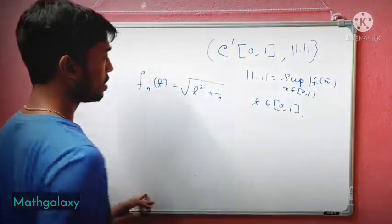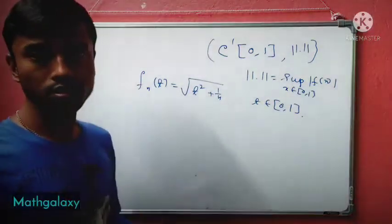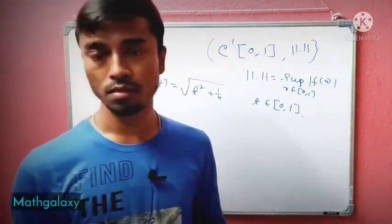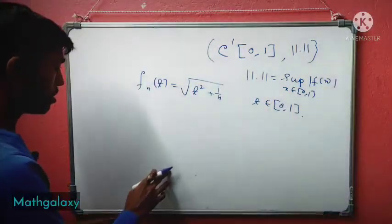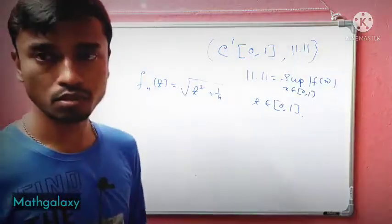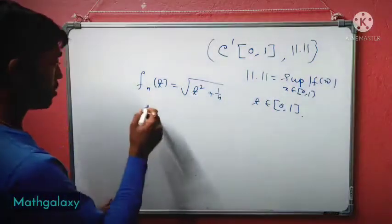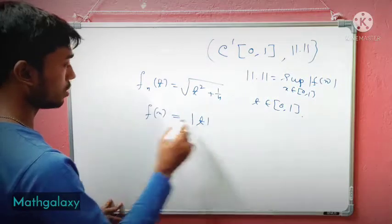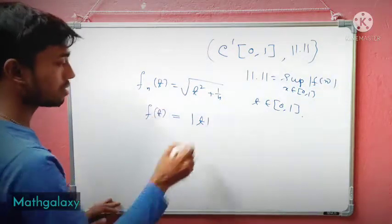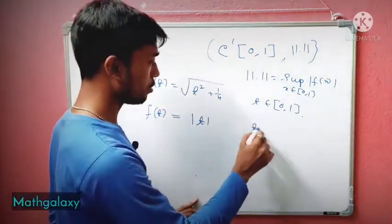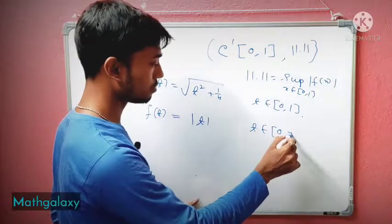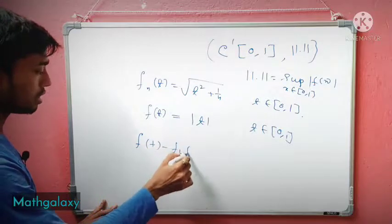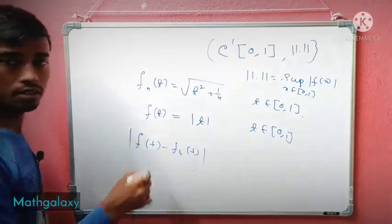We see that every fₙ(t) is differentiable and after differentiation it is continuous. Now we take the limit function. Let f(t) be this limit function — f(t) = |t|, where t belongs to [0,1].